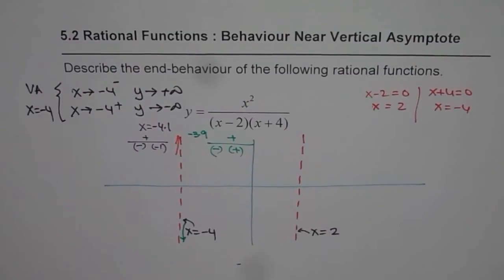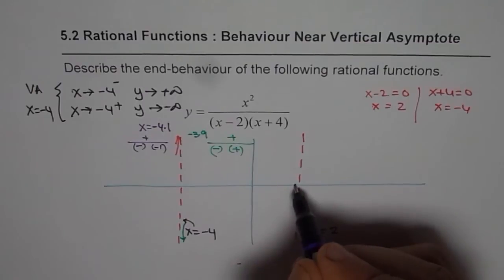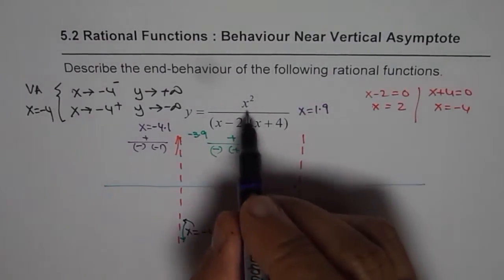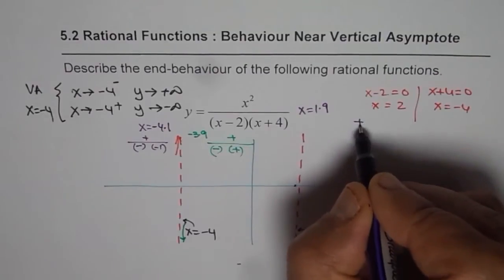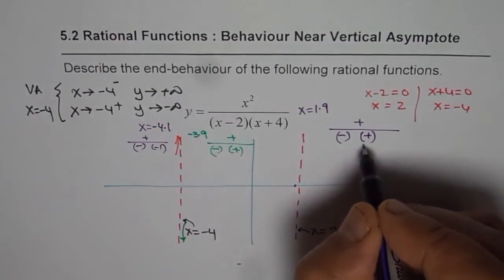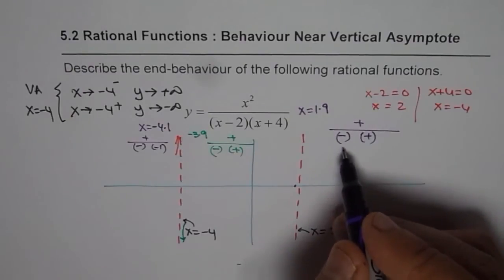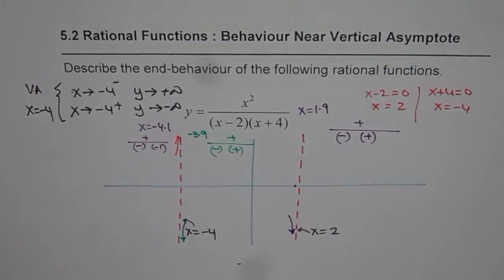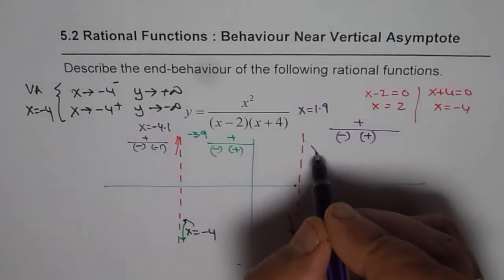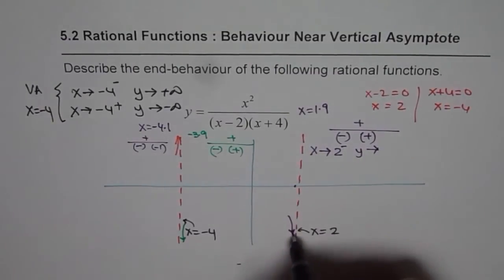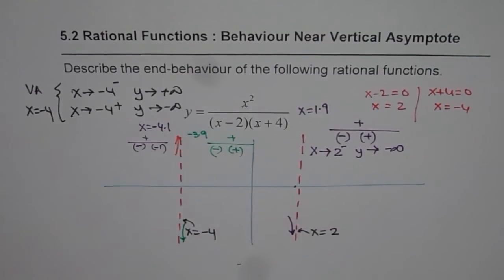Now let's test a point close to the vertical asymptote at x equals 2. Approaching from the left, take x equals 1.9. The numerator is positive. In the denominator, 1.9 minus 2 is negative, and 1.9 plus 4 is positive. So we have a positive divided by a negative times a positive, giving a negative value. We write: as x approaches 2 from the left, y approaches negative infinity.